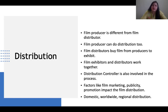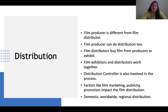The distributor is most of the time different from the film producer, though the film producer can also handle distribution. Film distributors buy the film from producers to exhibit it — meaning releasing it on theatrical screens and other platforms. Film exhibitors and distributors work in collaboration together. A distribution controller is also involved in the distribution process, just as a production controller exists in the production process.